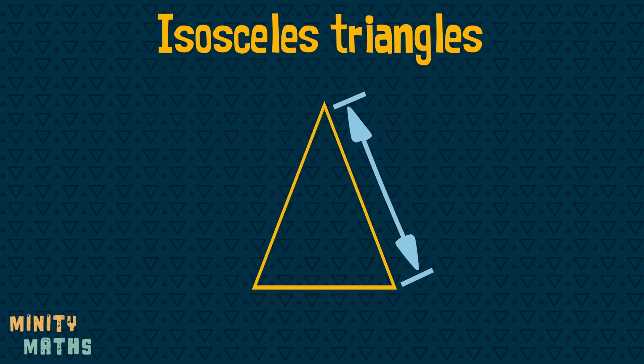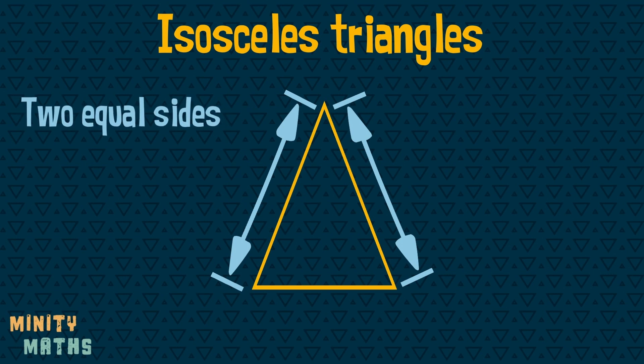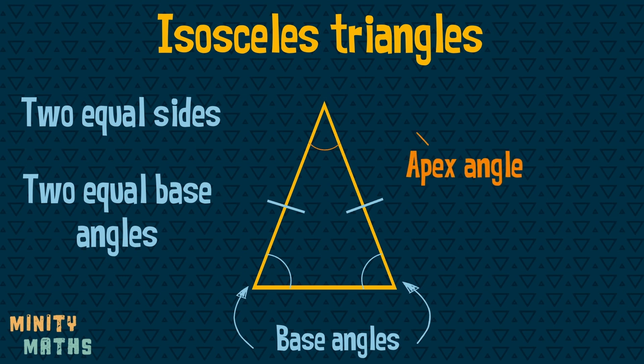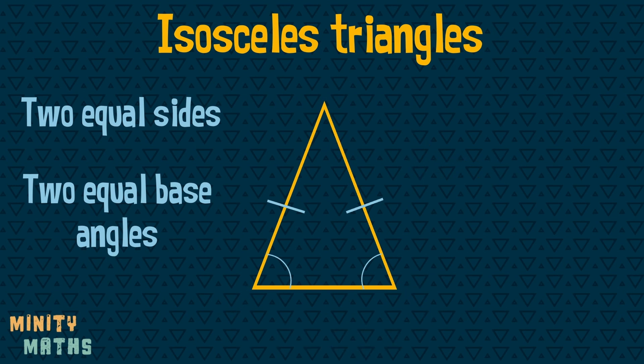Isosceles triangles have two equal sides, which are often indicated by these lines. They also have two equal angles at the base, the base angles. The remaining angle is called the apex angle. Isosceles triangles also have one line of symmetry.